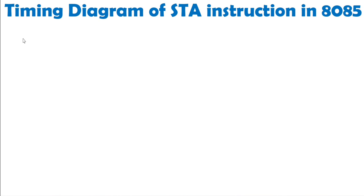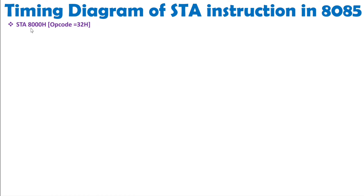First, let's see how STA is written. We have STA 8000h. To store this, you need the opcode of STA, which is 32h. You also need to store the address 8000h. So how many bytes are required? 3 bytes — one for the opcode and two bytes for the address.